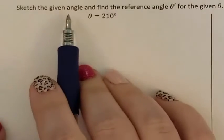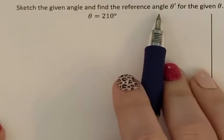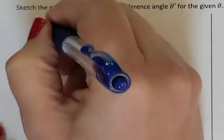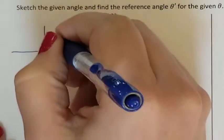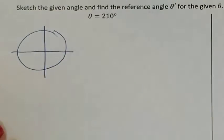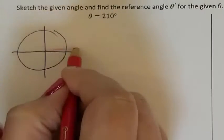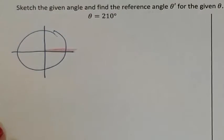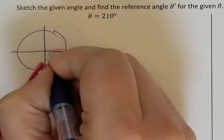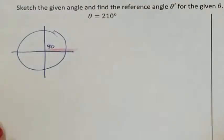So we need to sketch the given angle and then find the reference angle for theta. So first, we need to sketch 210 degrees. So here is my unit circle. You always start on this initial side. And I know that if I went this far, this would have just given me to 90.